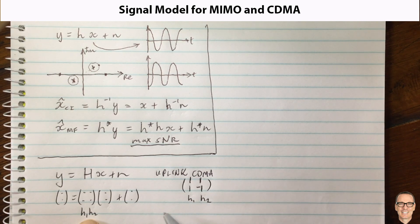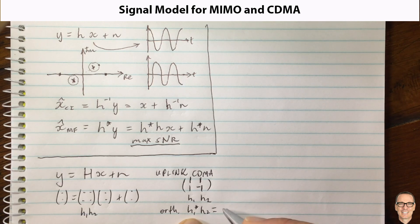And these are orthogonal, and you can see they're orthogonal in this example because h1 complex conjugate times h2 equals zero. So why is that?